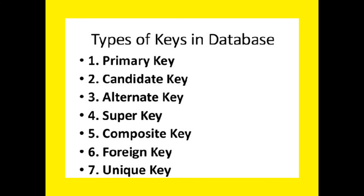There are seven types of keys in a database: primary key, candidate key, alternate key, super key, composite key, foreign key, and unique key. Of these, the primary key and foreign key are the most important.